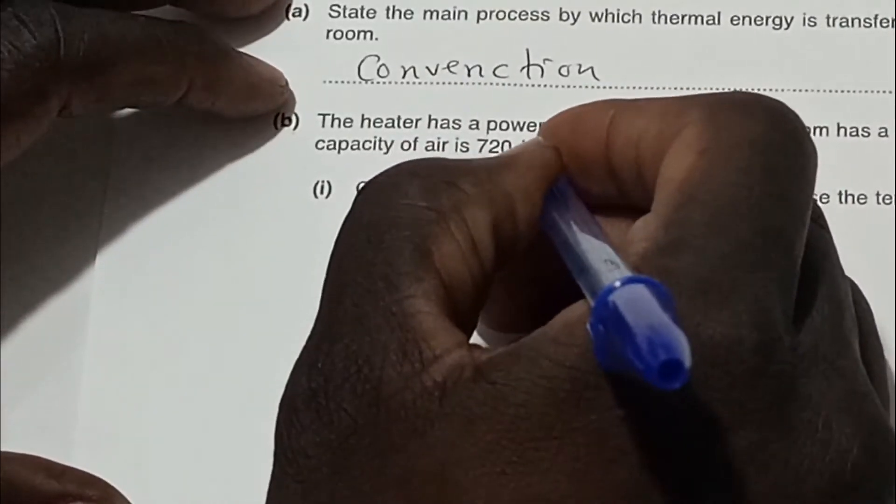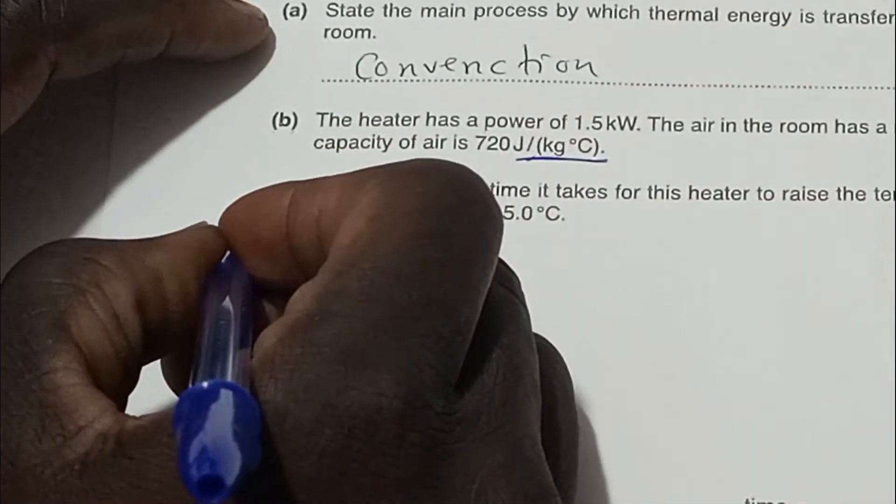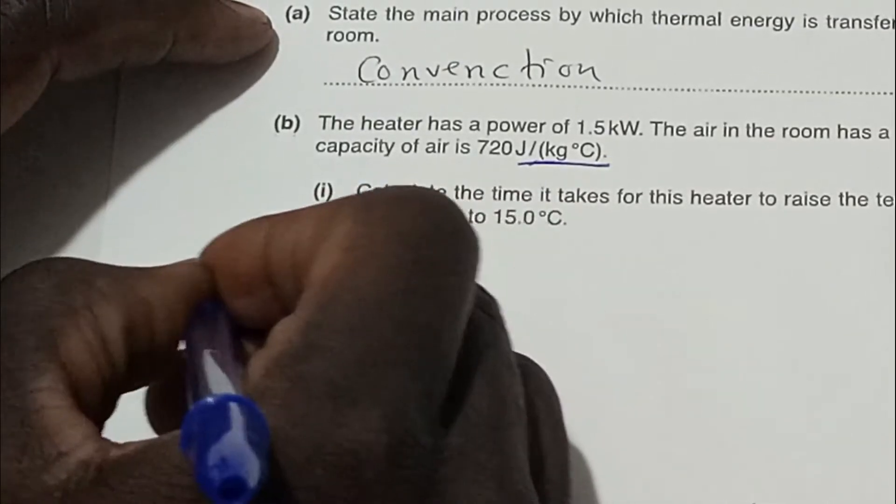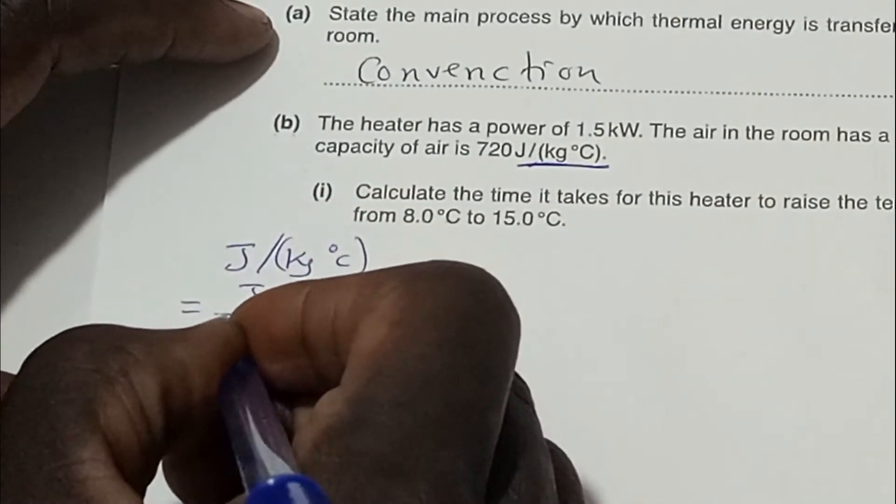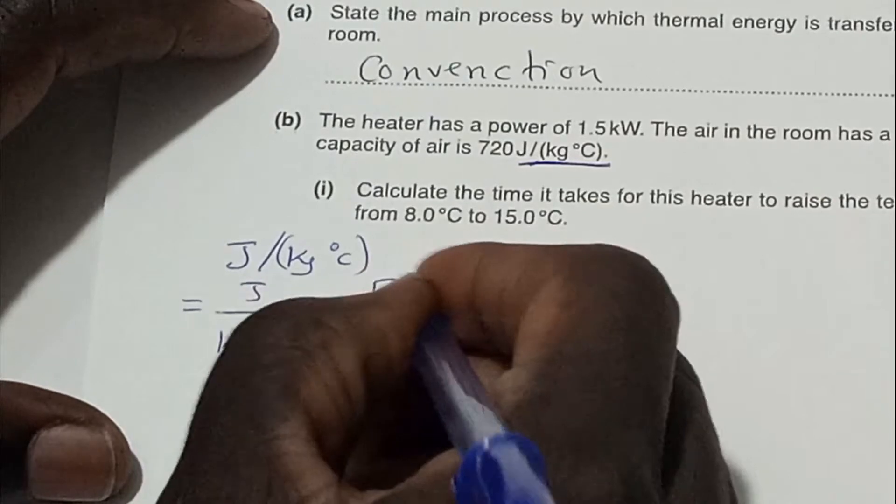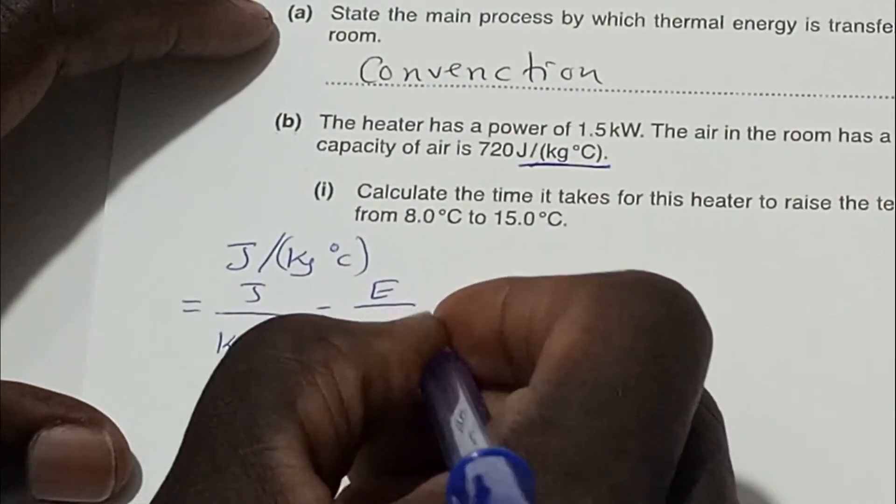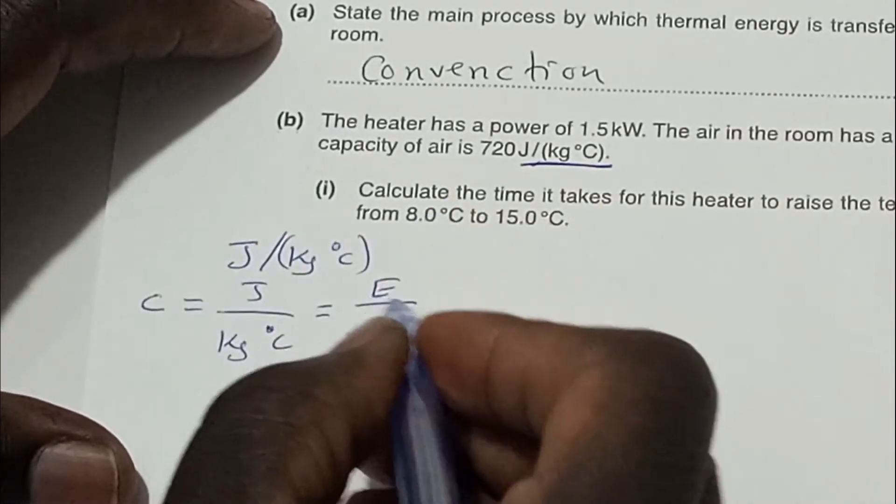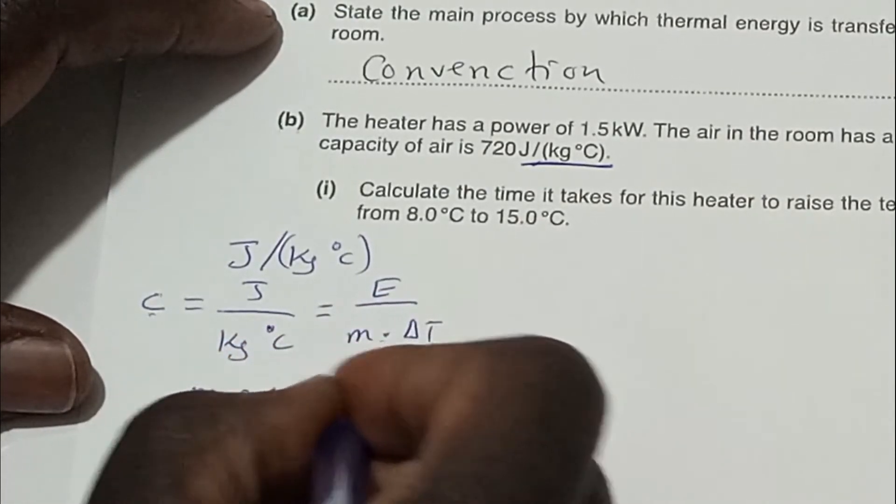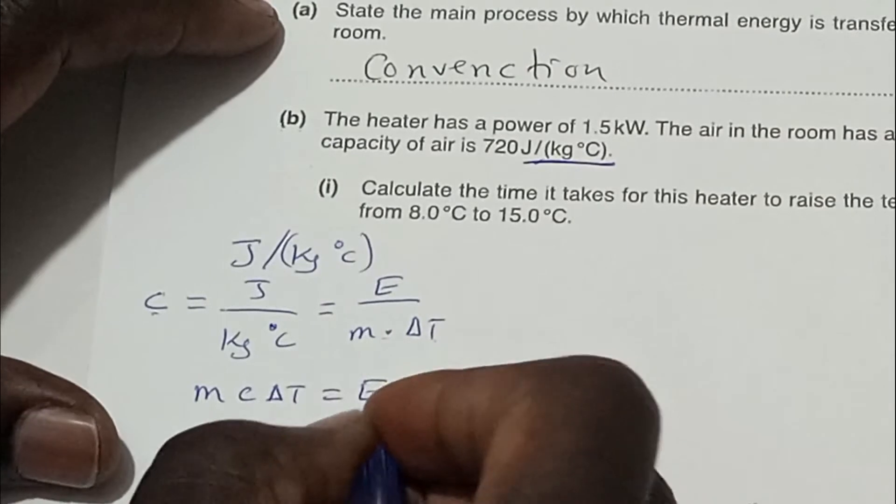Sometimes the units can actually help you to remember the formula. Look at this example here, once again. We have been given C, which is the specific capacity, as 720 joules per kilogram per degree Celsius. From this unit here, you can actually know that so if this can give us what? Because C is given by joules over kilogram times change in temperature or times degree Celsius. So from this unit here, we can derive the formula that is used to calculate specific capacity. So both of them is very, very important.